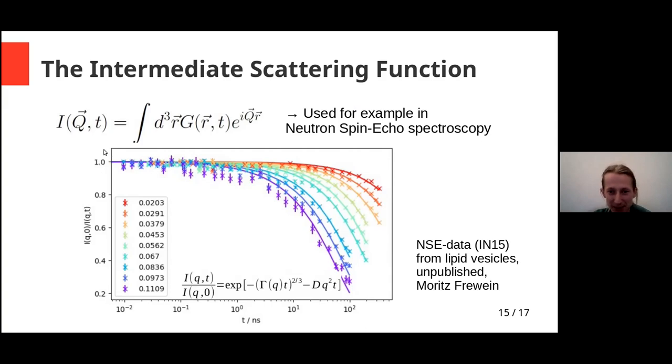So what we can see here, for example, these are data from lipid vesicles, and it's recorded in this Q range corresponding to bending fluctuations in these spherical shells that are about 100 nanometers in size. And we can see the faster this function decays in the Fourier time, the faster the vesicle moves, the faster the structure moves, and we can relate from this to the dynamics.